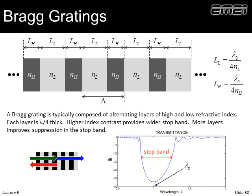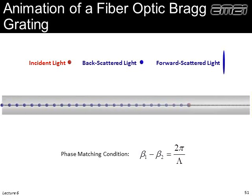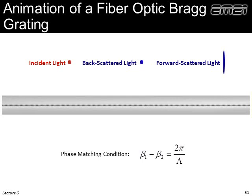Here's a movie illustrating how a Bragg grating works. The red ball is the forward wave. As it propagates it is coupling energy into the blue balls — the same mode but traveling in the reverse direction. Eventually there's no more energy to couple into that backward wave, so the backward wave also decays. That's a Bragg grating.